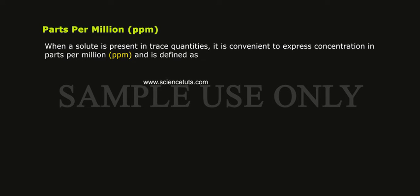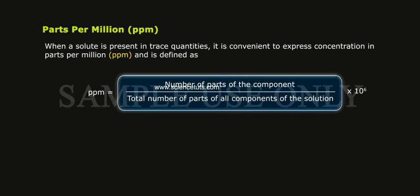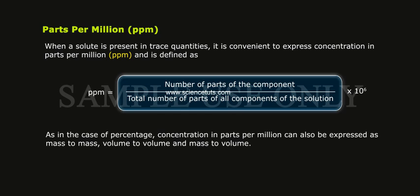Parts Per Million (PPM): When a solute is present in trace quantities, it is convenient to express concentration in parts per million (ppm). It is defined as: Parts per million equals the number of parts of the component divided by total number of parts of all components of the solution, multiplied by 10 to the power of 6. As in the case of percentage, concentration in ppm can also be expressed as mass to mass, volume to volume, and mass to volume.